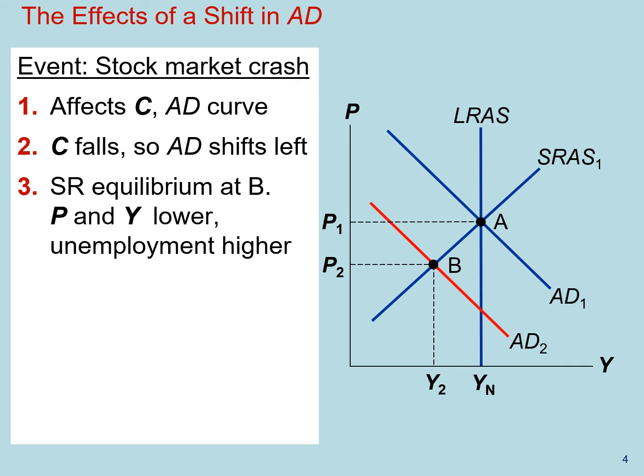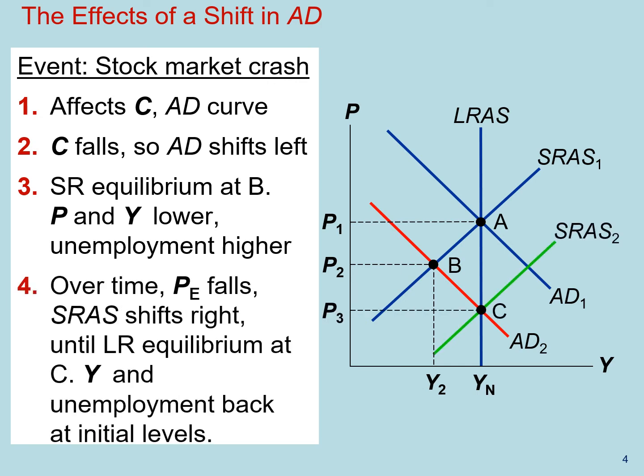So over time, expectations about the price level falls. Wages fall and sticky prices become flexible and reduce prices overall in the economy. We expect that that will move the short-run aggregate supply to the right. And this process will continue until the economy arrives at point C, where GDP and unemployment are back at their natural rates.